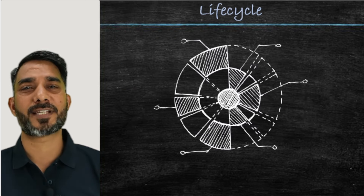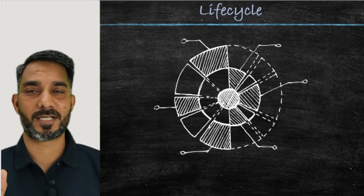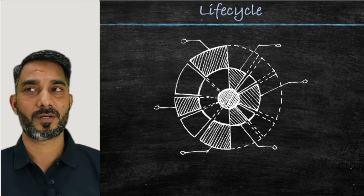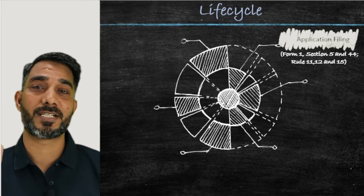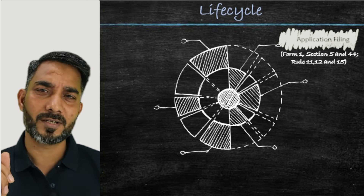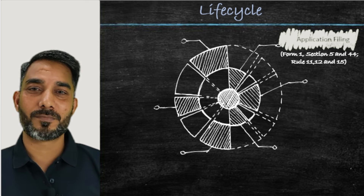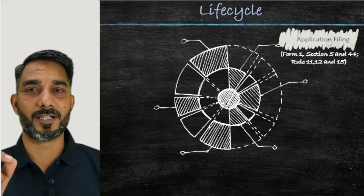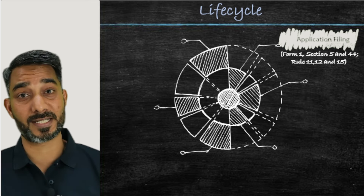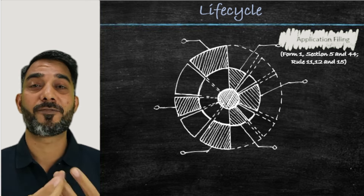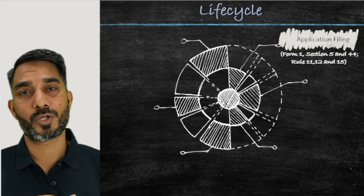Let's move on to understand the life cycle of design registration. Don't worry too much about it because it follows the same broad process as a patent application. The first step is filing of the application — we use Form 1, as per Section 5 or Section 44. As per Section 5, if your design is original, has not been published to the public domain before the filing date, and is not obvious with regards to existing designs or a combination of designs, you can go ahead and file for registration using Form 1. You can directly file with the Indian Patent Office as your first filing, or you could take priority from convention countries — similar to patents.